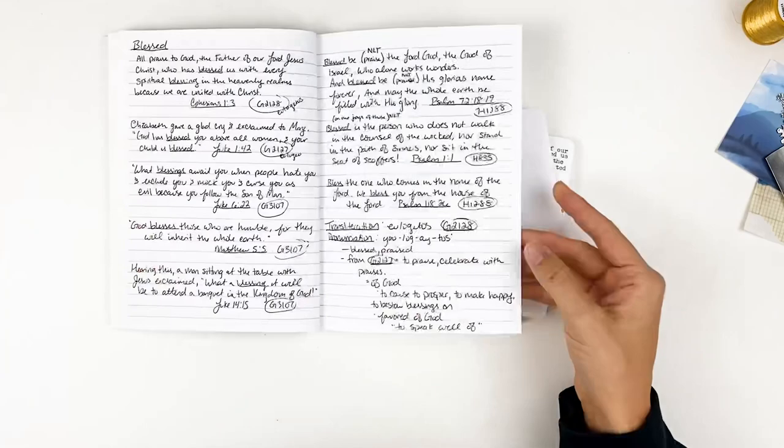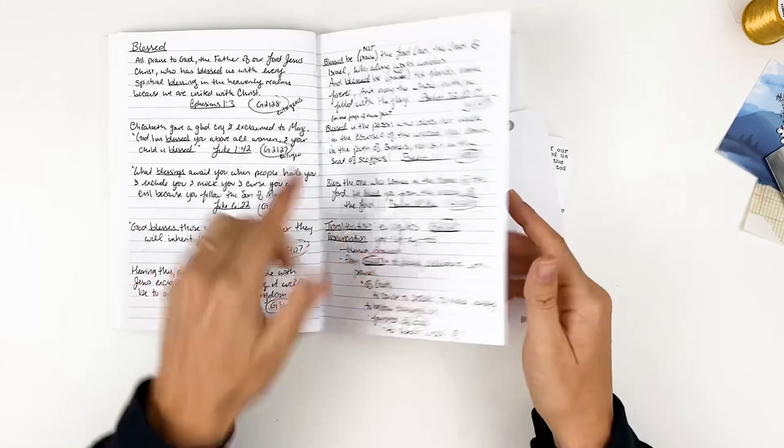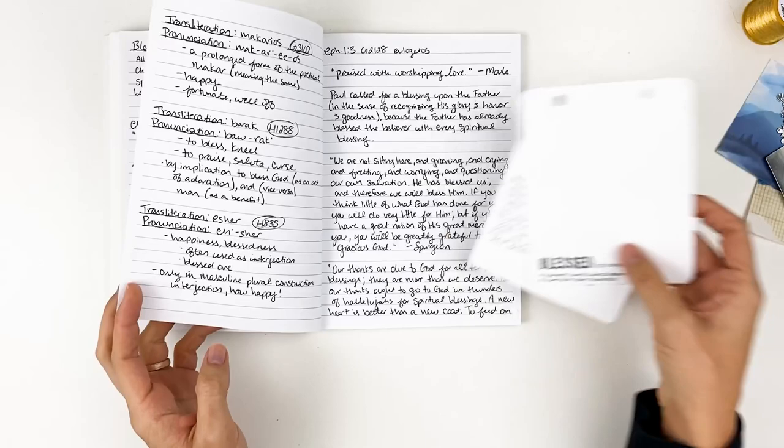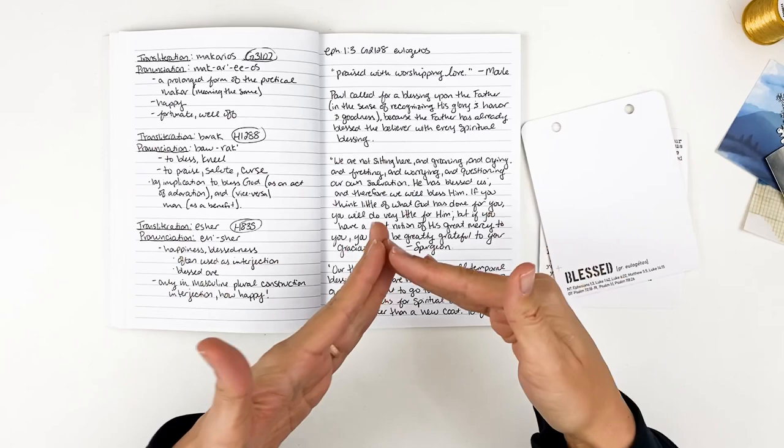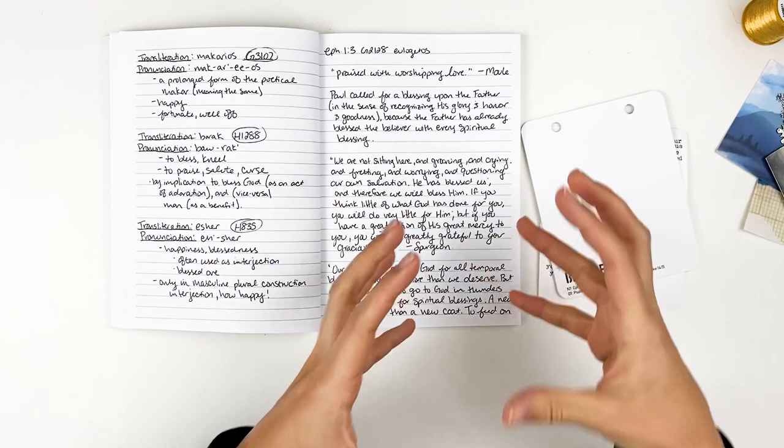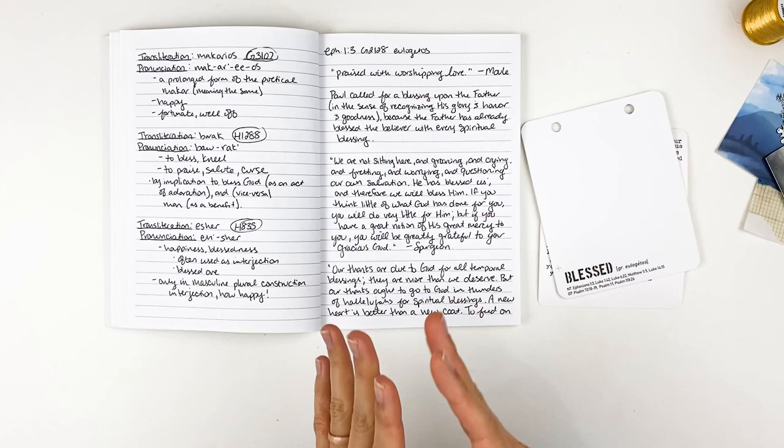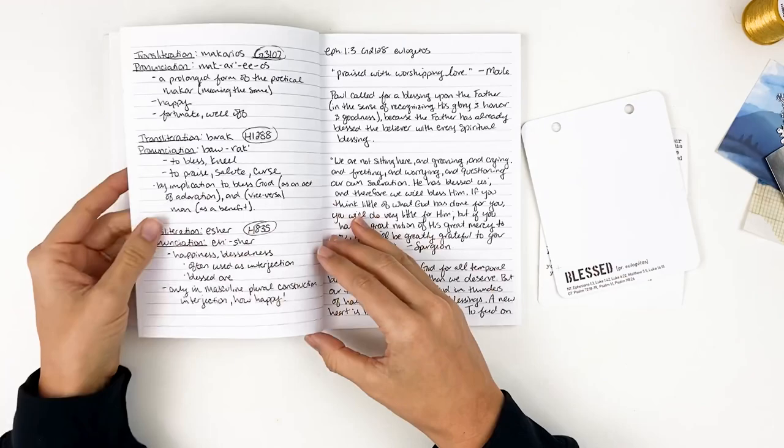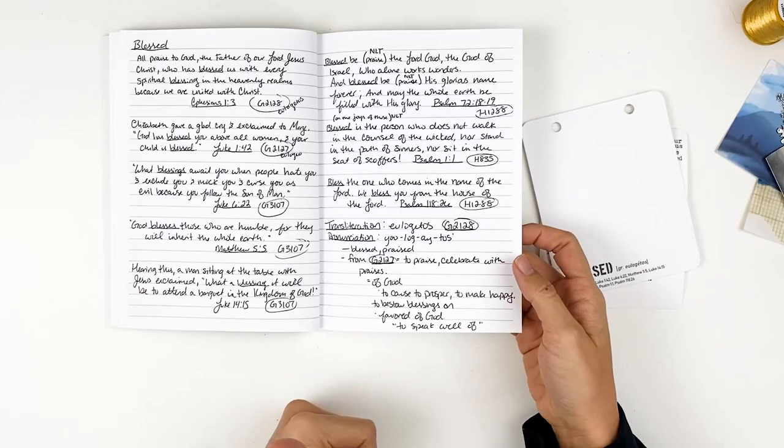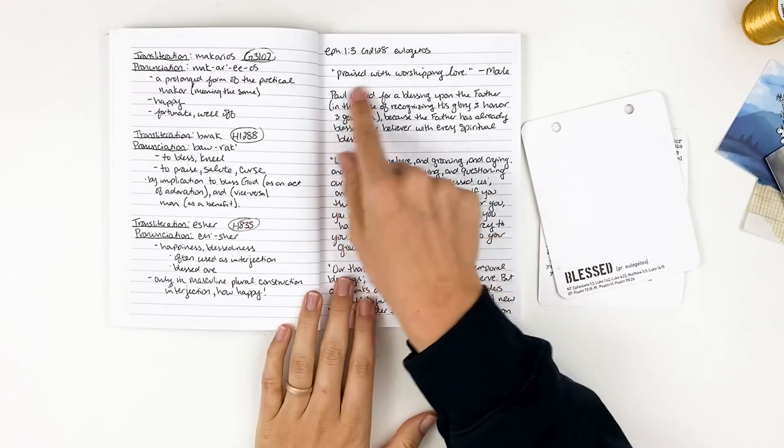So I did go ahead and write out all those different versions of that word. But for my card, I will be using the Eulogatos, G2128 is the word that I'll be using in Ephesians 1:3 is the verse that I will be using from here on out for my focus. So what that means is when I go into the Blue Letter Bible app, then I'm looking at the commentary for that word. I'm looking at specifically the Strong's Concordance for that version of the word and then the commentary on that. And so there was some commentary in the Blue Letter Bible app. Let's elaborate. Let's go a little deeper than that.